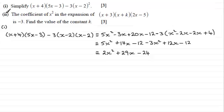Now, for the second part, we're given that the coefficient of x squared in the expansion of x plus 3 multiplied with x plus k multiplied with 2x minus 5 is minus 3. And we've got to find the value of the constant k for 3 marks. So again, if you'd like to have a go at this, haven't done so already, I'll just give you a moment to pause the video.